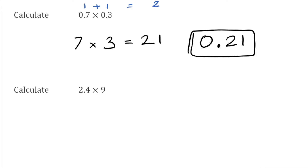For this next question we've got 2.4 multiplied by 9. Again we're going to count the decimal places in each number. There's one decimal place in the first number and no decimal places in the second number. Adding them together we get 1, which means our final answer will be to one decimal place. We're going to do 24 multiplied by 9 using the column method — covered in another video, link in the description.